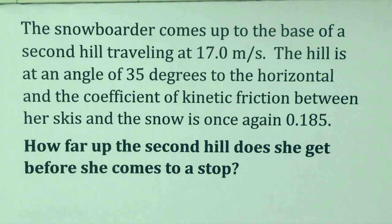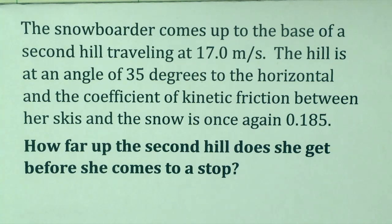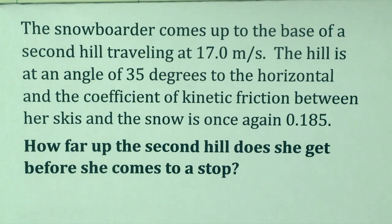The question asks: the snowboarder comes up to the base of a second hill traveling at 17.0 meters per second. The hill is at an angle of 35 degrees to the horizontal, and the coefficient of kinetic friction between her skis and the snow is once again 0.185. We ask how far up the second hill does she get before she comes to a stop?